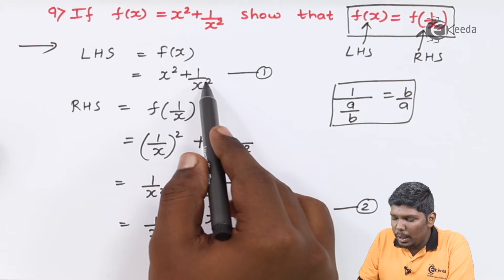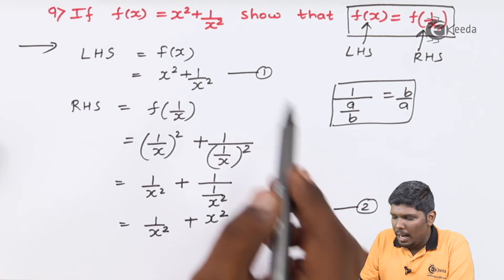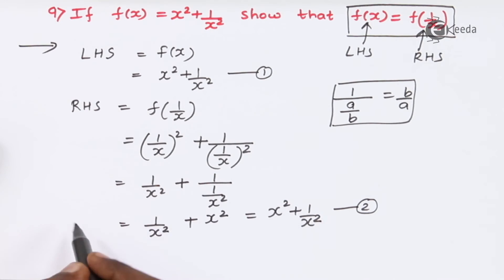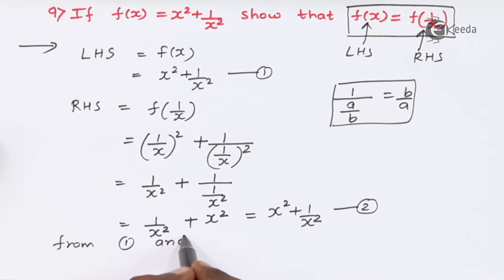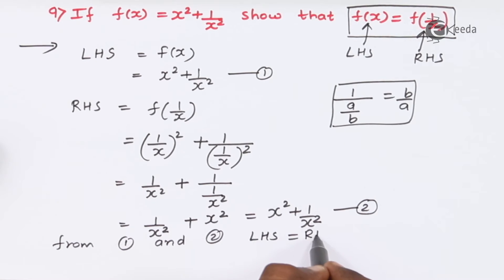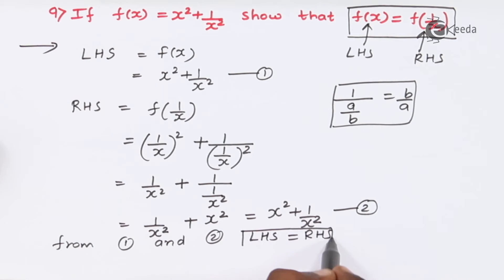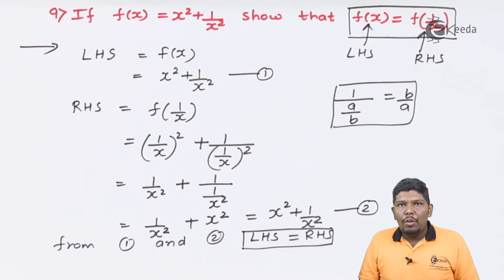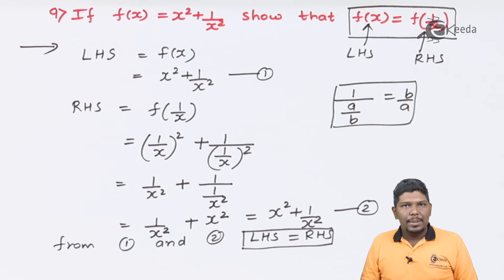If you compare equation number 1 and equation number 2, both are the same. So from 1 and 2, we can say LHS is equal to RHS. I hope you have understood this video. Thank you for watching. Stay tuned with Ikeda and subscribe to Ikeda. Thank you.